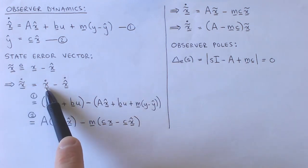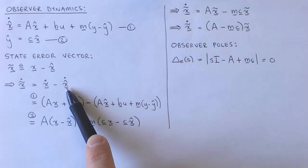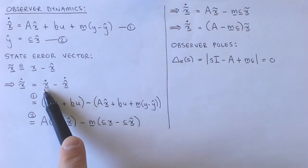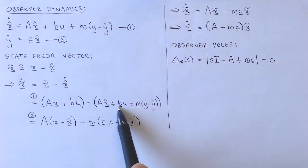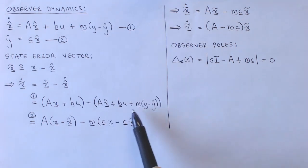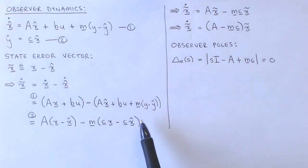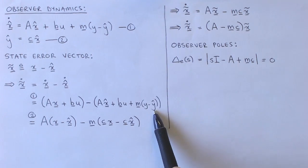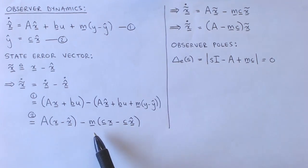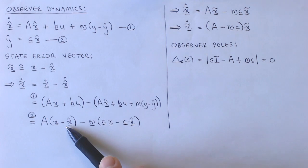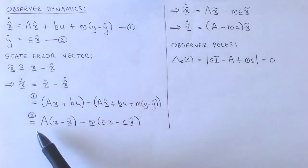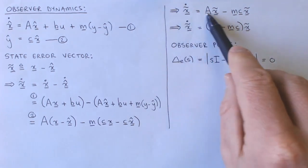We then substitute AX plus BU for X dot from the state equation of the plant model, and the right-hand side of equation 1 for X hat dot. In the next line, we substitute CX for Y from the output equation of the plant model, and the right-hand side of equation 2 for Y hat, and then gather the terms containing A and the terms containing M. We now recognize X minus X hat to be the state error, X tilde, and we can write this equation in terms of X tilde only.